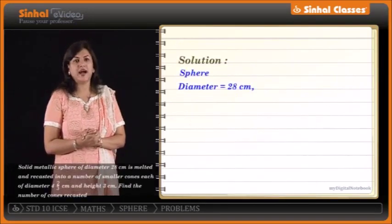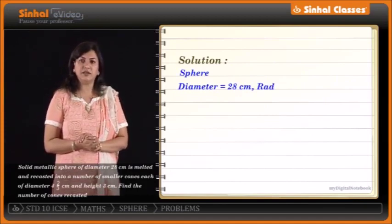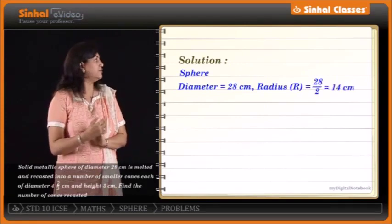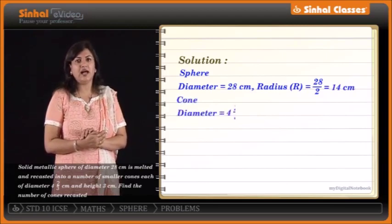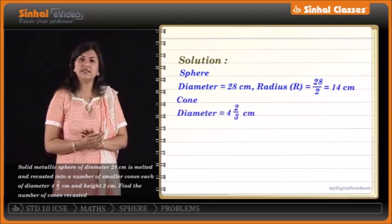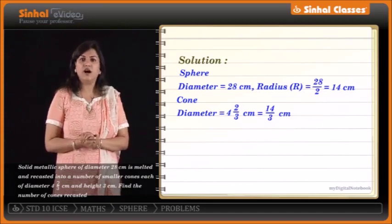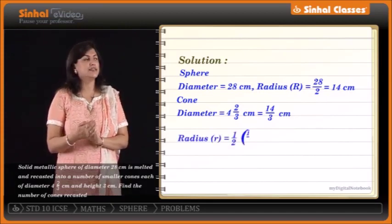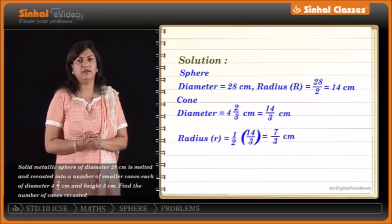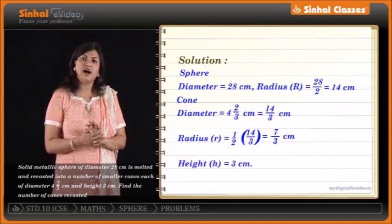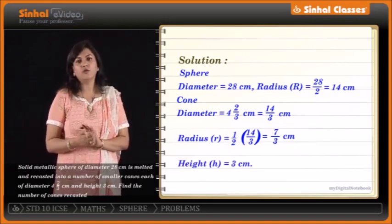For the sphere, diameter = 28 cm, so radius R = 14 cm. For the smaller cones, diameter = 4⅔ cm = 14/3 cm, so radius r = 7/3 cm. The height of each cone H = 3 cm.